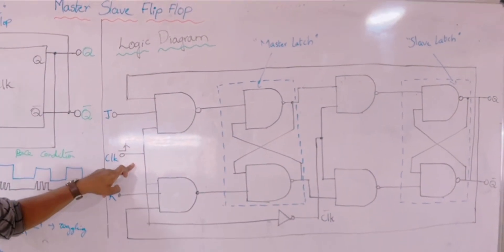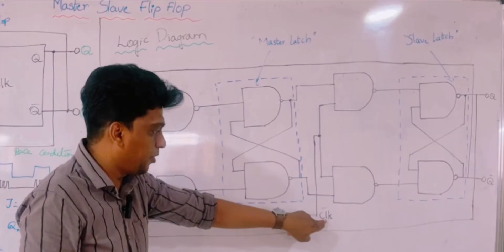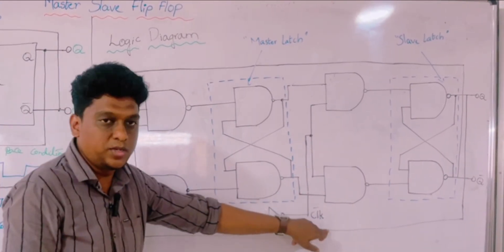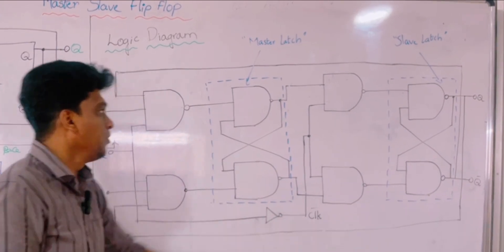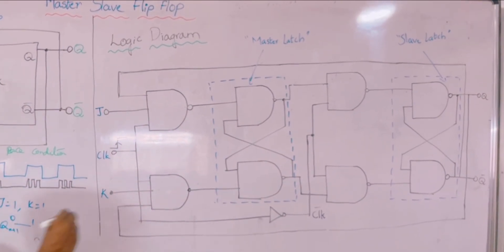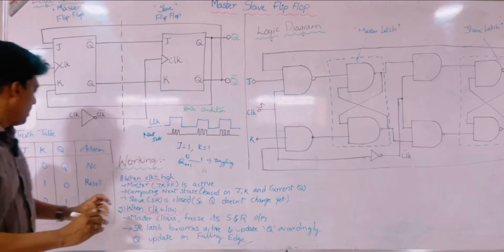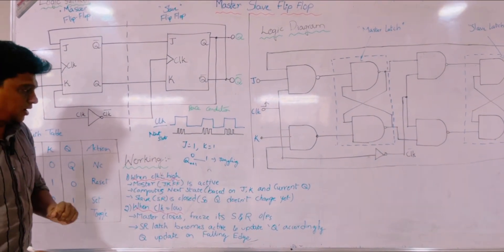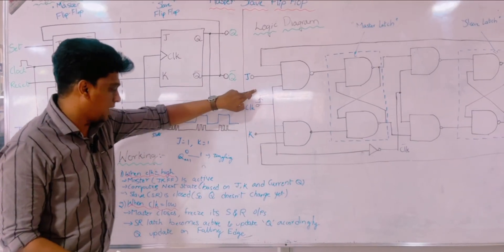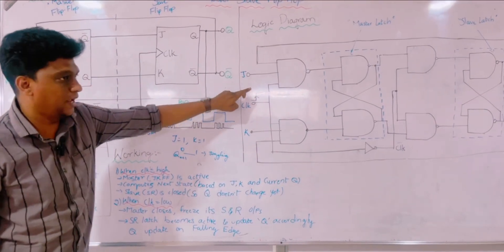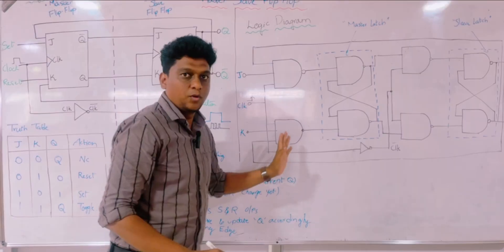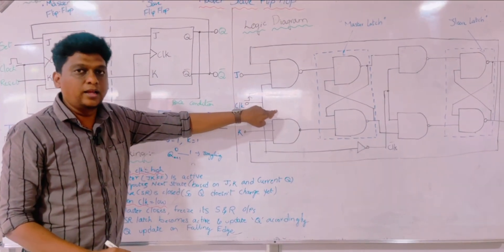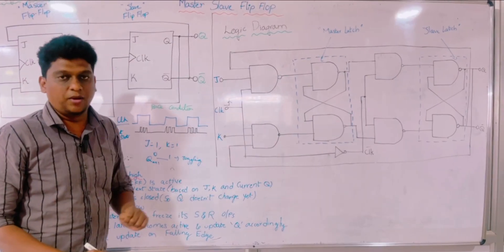We provide the rising edge clock pulse to the master, and by using an inverter, we provide the falling edge clock pulse to the slave. So the master is a positive edge trigger and the slave is a negative edge trigger. Whenever the clock pulse is high, this master flip-flop gets active and performs its operation.